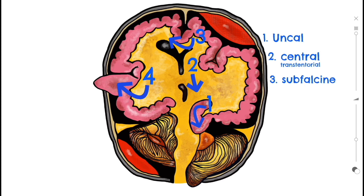Arrow four is pointing to an example of transcalvarial herniation, which is when the brain squeezes through a defect within the skull. This defect could be a fracture or a surgical site, and is actually what may happen during a craniectomy.